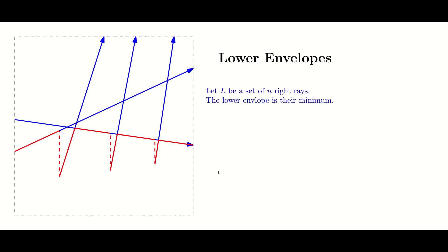However, once we look at more complicated objects, this is no longer true. For example, let's look at a set of n right rays. A right ray is a ray — a line segment that goes to plus infinity in the x direction. All five rays in this picture are right rays. Their lower envelope is again the minimum of the functions described by these rays. The lower envelope could have discontinuities, or it could also be undefined — for example, if all the rays start at the same point, then before that point the lower envelope is not defined.